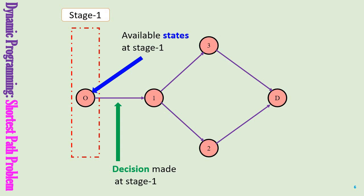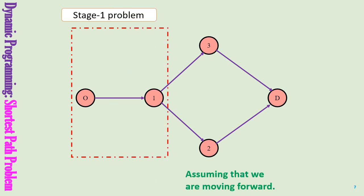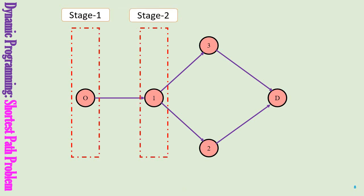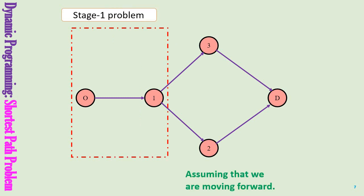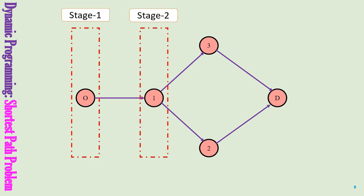The decision will take you to stage 2. We define the stage 1 problem as all the possible decisions that take you away from stage 1 to the next following stage, which is stage 2. So in forward recursion, the stage 1 problem consists of starting from stage 1 and making all decisions to reach stage 2.